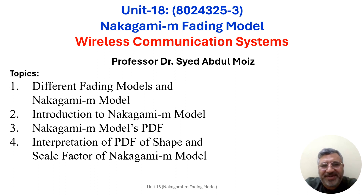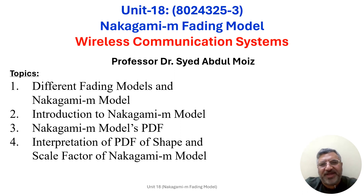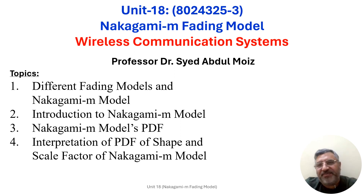The Nakagami-M fading model represents a general type of fading channel model by adjusting a single parameter M, which is related to the multipath component and signal envelope distribution. The Nakagami-M model can reduce to the Rayleigh model when M equals 1, or for higher values, it automatically approaches the Rician distribution model. In this unit, we first discuss the applicability of the Nakagami-M model with respect to available fading models such as the Rayleigh and Rician fading models.